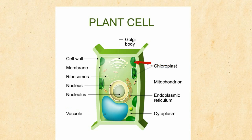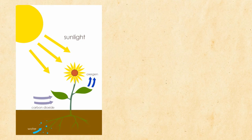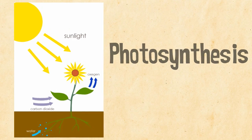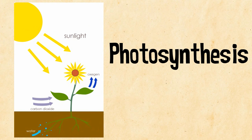Plants have chloroplasts that contain chlorophyll, and this is used to produce glucose, which we also call sugar. Plants take carbon dioxide plus water with sunlight to create glucose and oxygen in a process called photosynthesis.